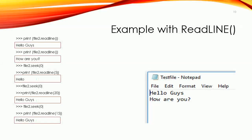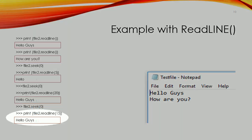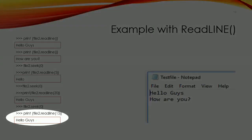Calling seek() again to return to the beginning of the file, then readline(15) — since 15 is also bigger than the length of the first line, it will do the same thing and print until the end of the line: 'Hello, guys.'